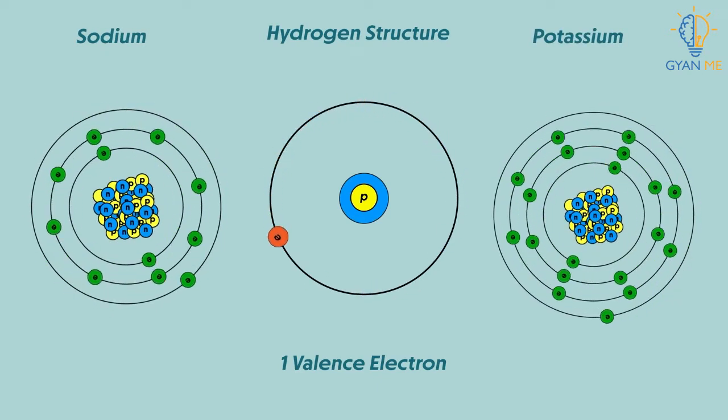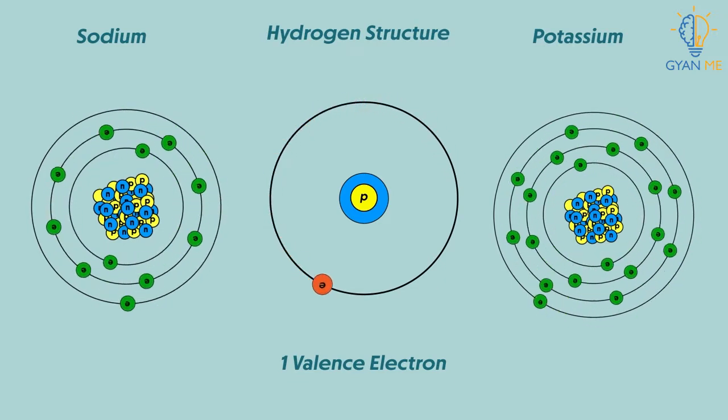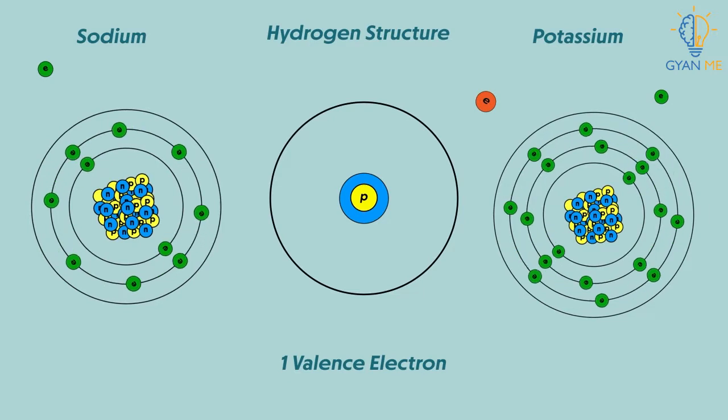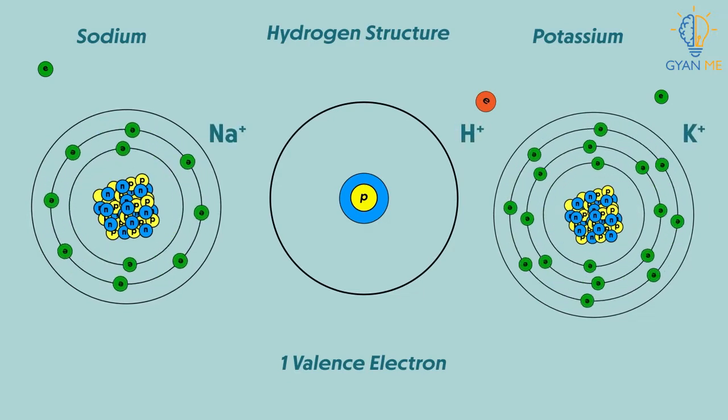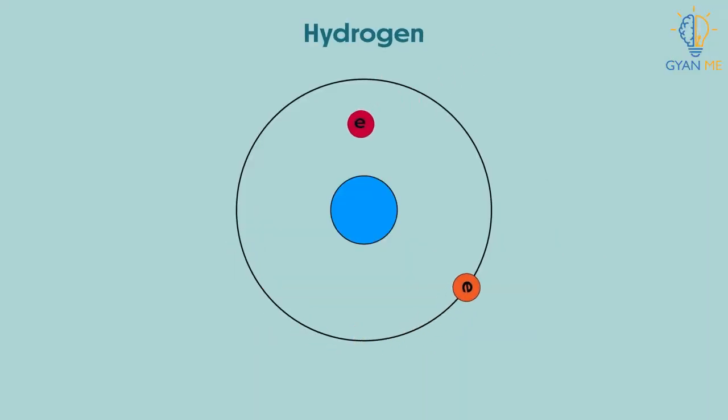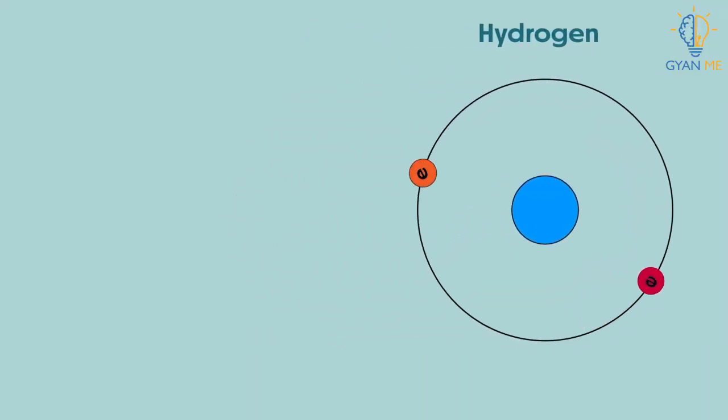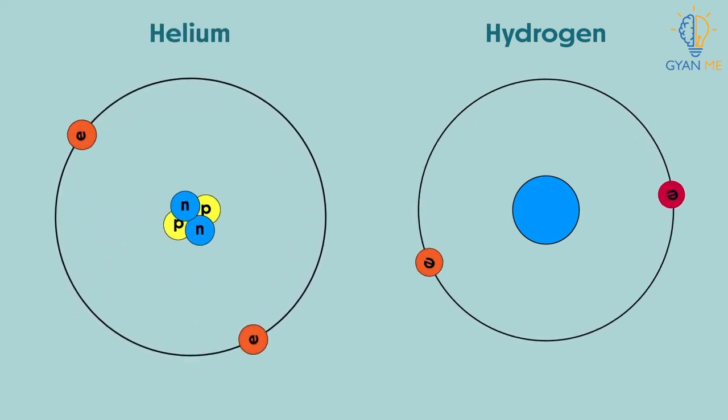This is special because during any chemical reaction, hydrogen is able to lose this electron and become positive ion like sodium, potassium or other elements of this group. Also, it can take one electron, configuration of helium, a noble gas, and hence become stable.